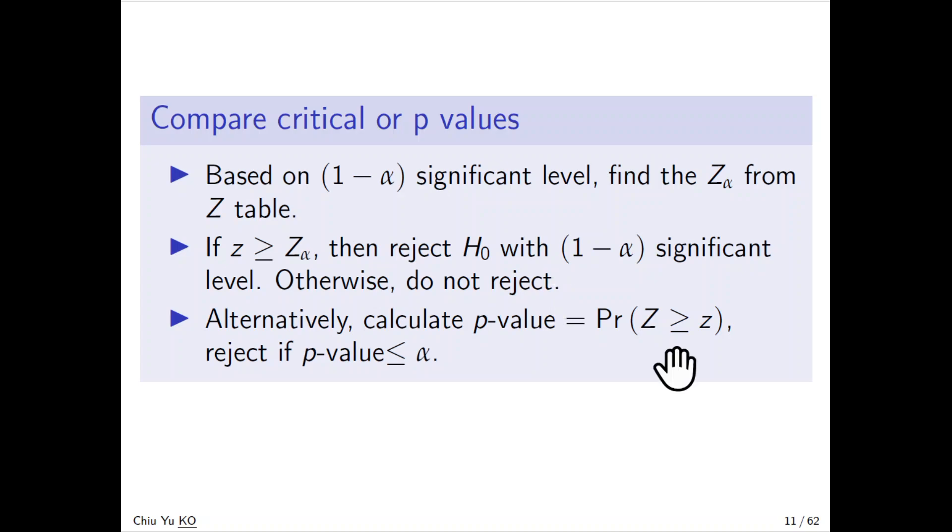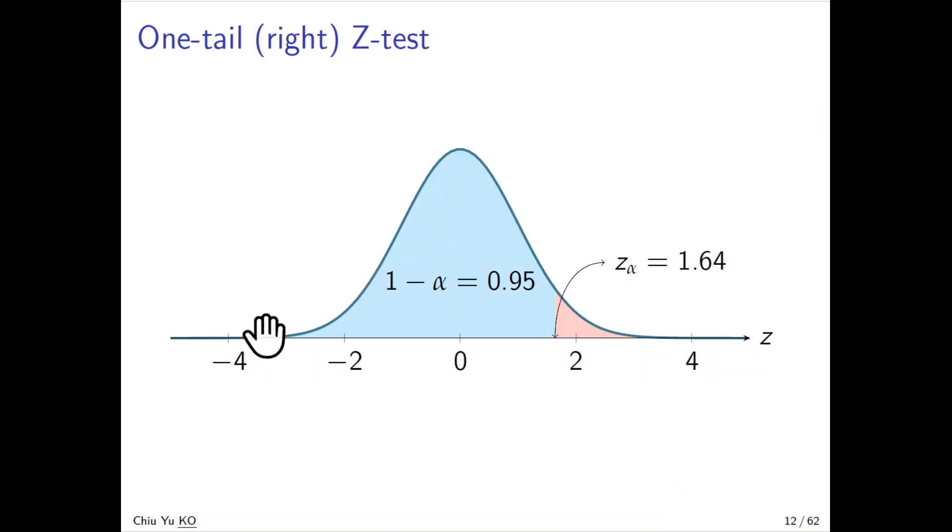Let's see this diagram. This is the z distribution where 1-α = 0.95, so the z critical value is 1.64. If the sample test statistic is in the red region, then you reject the null hypothesis. In the blue region, you do not. Alternatively, since the red region is 5%, you can calculate the p-value. If it's less than 5%, then you also reject.